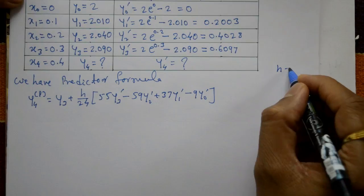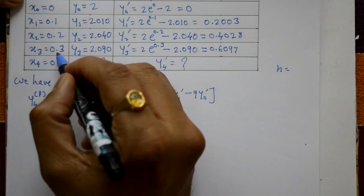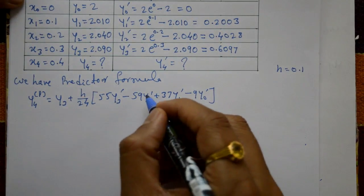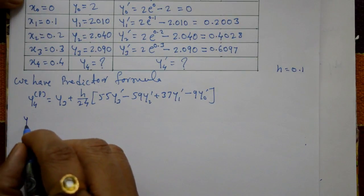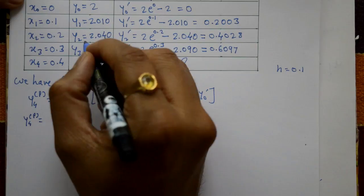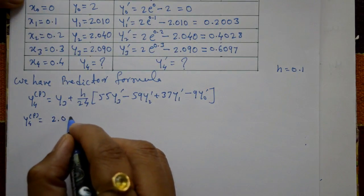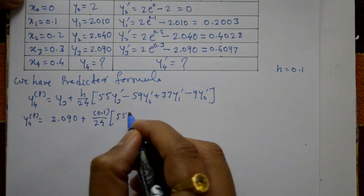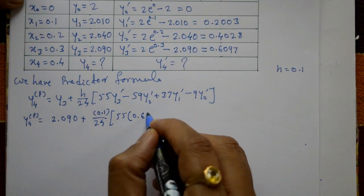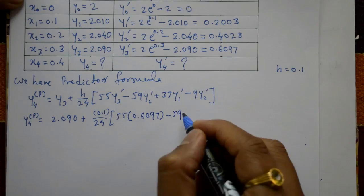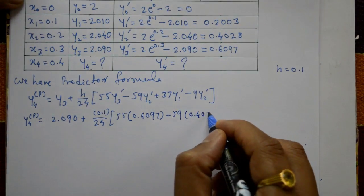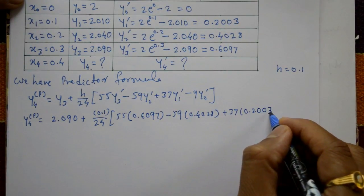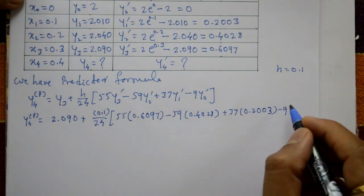The step size h is equal to 0.1, since the x values are equidistant. Substituting into the predictor formula: y4_p equals y3 value 2.090 plus 0.1 divided by 24 into (55 × 0.6097 minus 59 × 0.4028 plus 37 × 0.2003 minus 9 × 0.002).